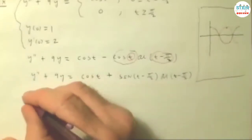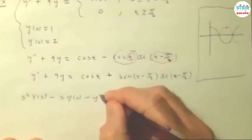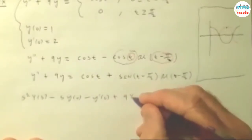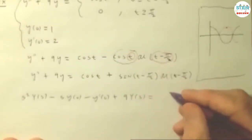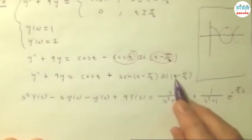We apply the transform to both sides. We have s squared Y of s minus sY(0) minus Y prime of 0 plus 9 capital Y of s. On the right-hand side, we have s over s squared plus 1, plus 1 over s squared plus 1, times e to the negative pi over 2s. And coming from that.